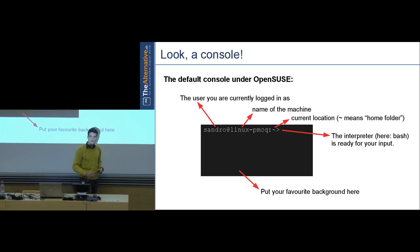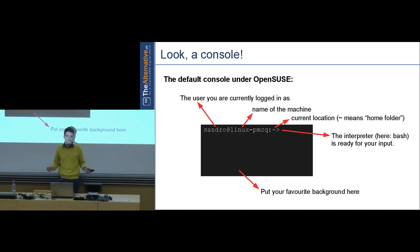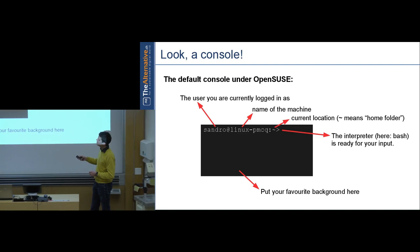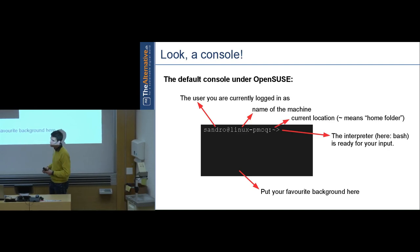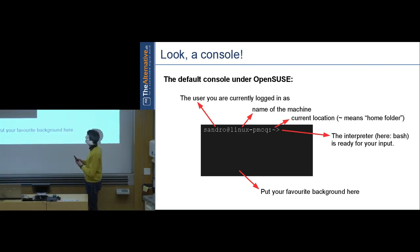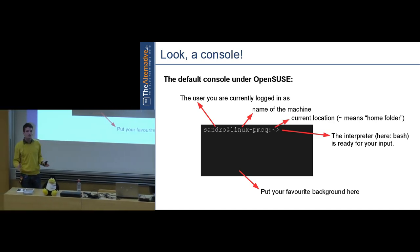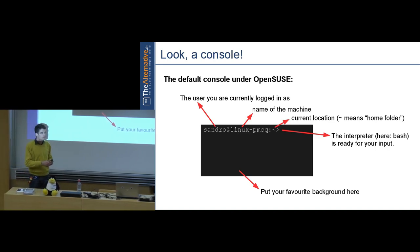This is what a console looks like — everybody should know how to start one. Usually you go to your start menu and type 'terminal' or 'console'. On the left you see your username, then an at-symbol, then the computer name. After a colon comes your current location — just like a file manager, you're always at some location navigating through files.